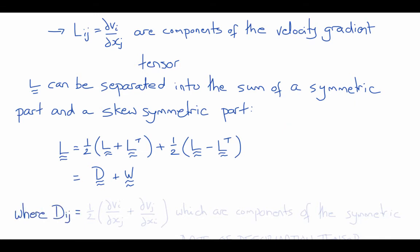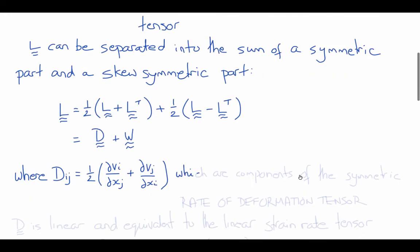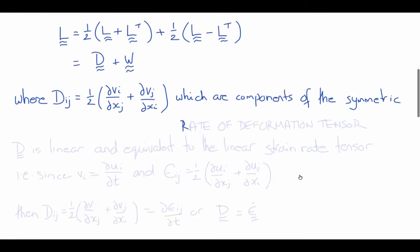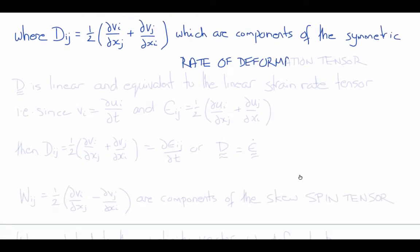Therefore, the components of d will be one-half del vi del xj plus del vj del xi, which looks very similar to the Cauchy strain tensor with v instead of u. In fact, the components of the rate of deformation tensor are often also referred to as the components of the strain rate tensor.